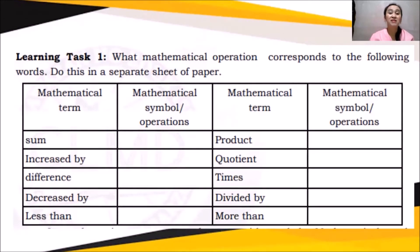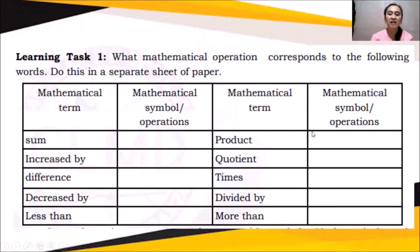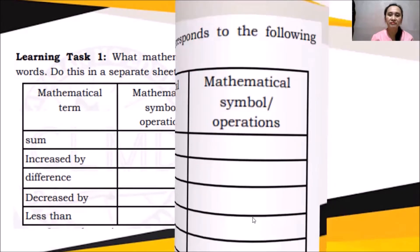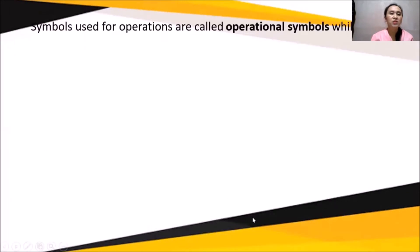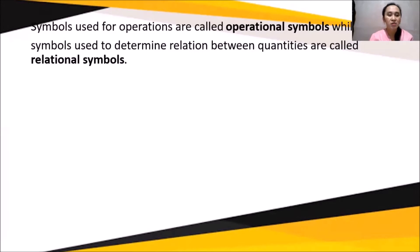In our learning task number one, we need to write the mathematical symbol or operation based on the given mathematical term. For example: sum, increase by, difference, decrease by, less than, product, quotient, times, divided by, and more than. Symbols used for operations are called operational symbols, while those used to determine relations between quantities are called relational symbols.